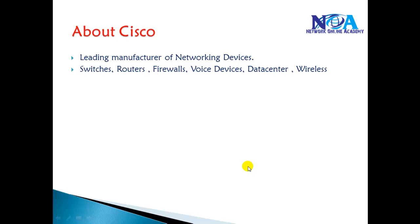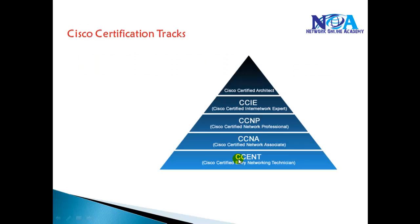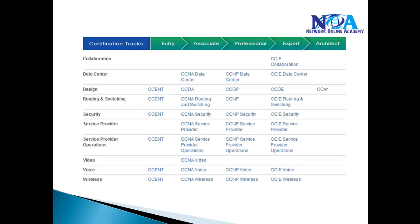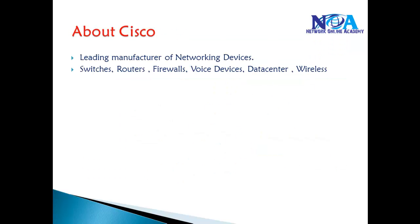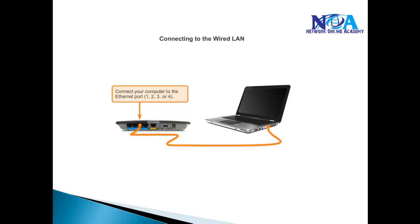In this video we'll be discussing two major things: Cisco and its different certification tracks. Cisco provides CCNA, CCNP, and CCIE, and we'll cover the different specializations — just an overview of all those things.